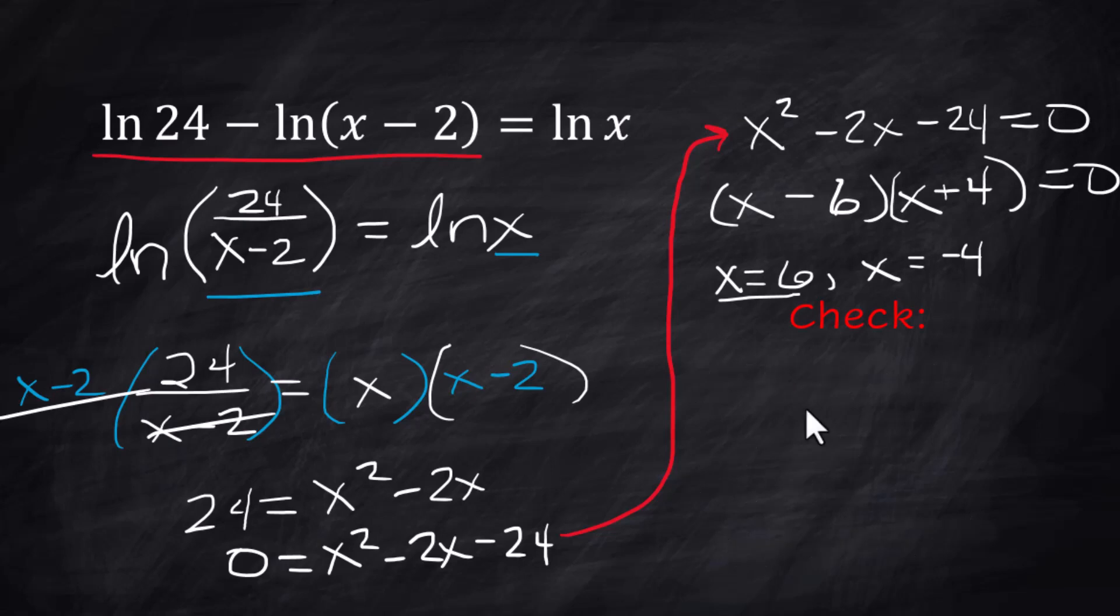Now let's check x equal to negative 4. And you have the natural log of 24 minus the natural log of negative 4 minus 2 is a negative 6. Is that going to equal the natural log of negative 4? Well, right now we have a problem. You cannot do natural logs of negative numbers. This problem has one solution, and that is x equals 6.